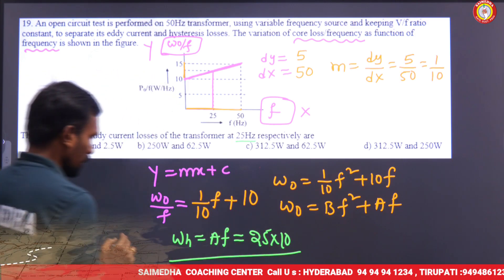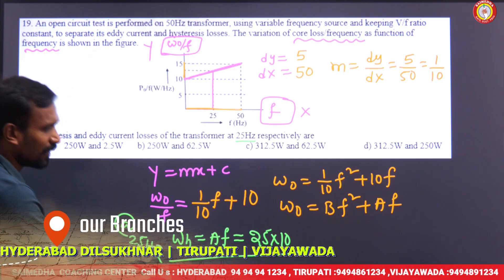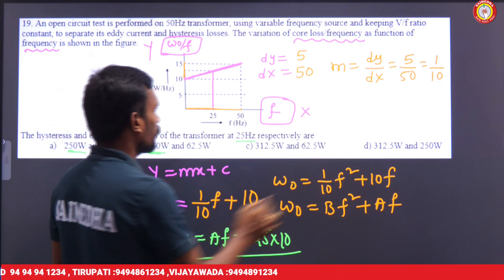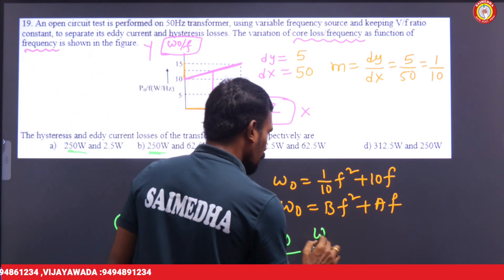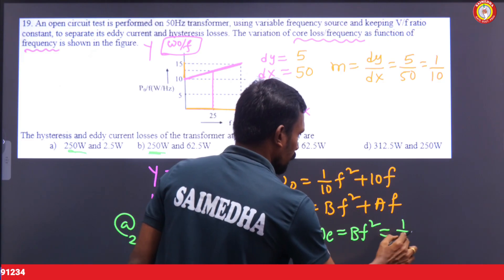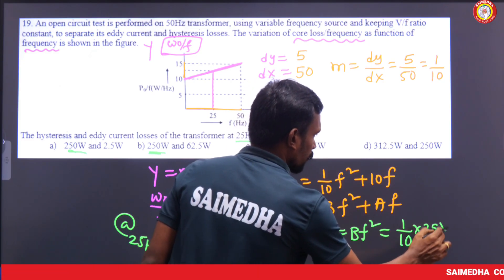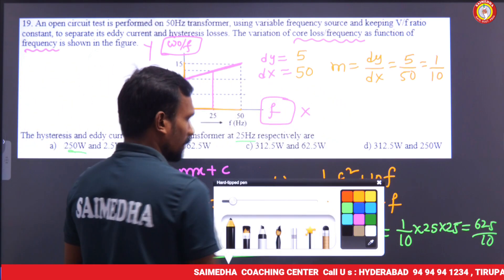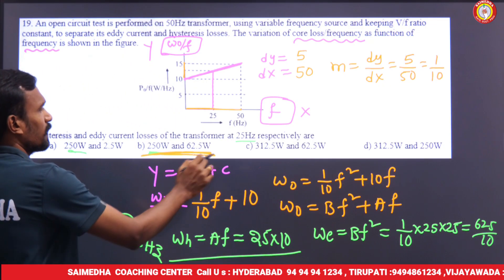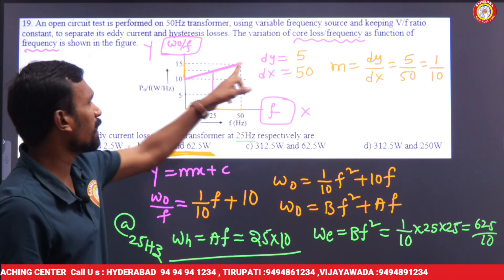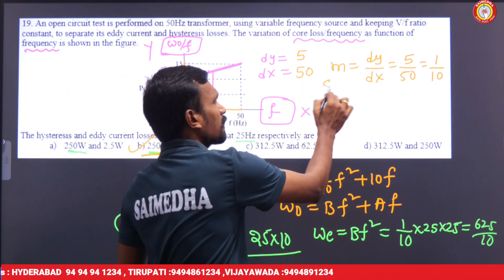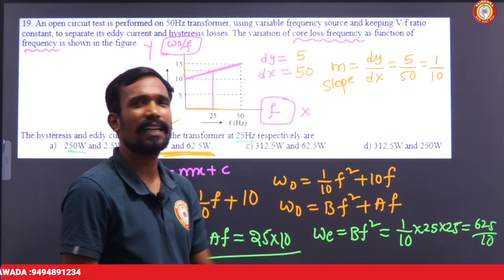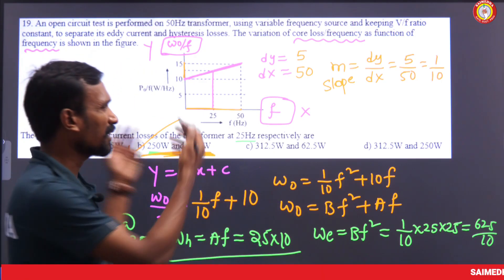We are calculating at 25 Hz. Hysteresis loss equals a times f equals 10 times 25 equals 250 watts. For eddy current losses: bf² equals (1/10) times 25² equals (1/10) times 625 equals 62.5 watts. The key is using slope m from the graph to find a and b, then computing both losses easily.